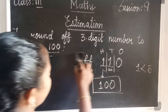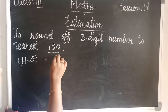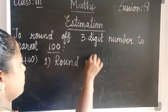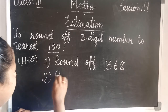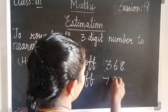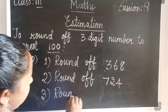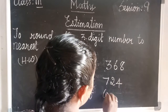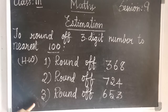Now we see the home sums. Question number 1: round off 368. Question number 2: round off 724. Question number 3: round off 6153. You do your sums carefully children. Practice well. We will see the next class for the book exercises. Thank you.